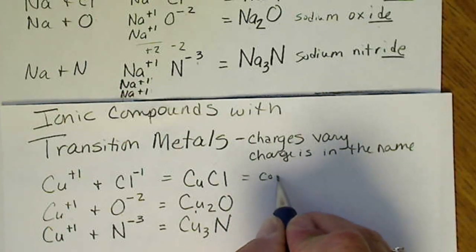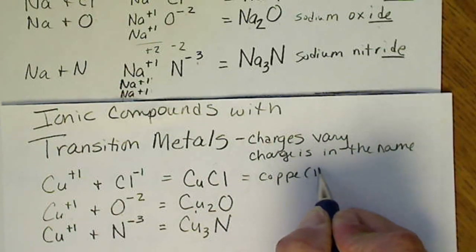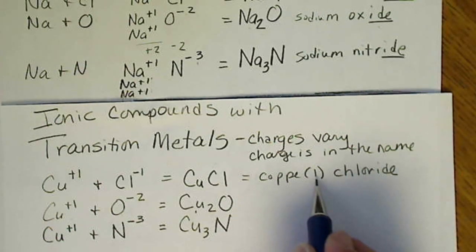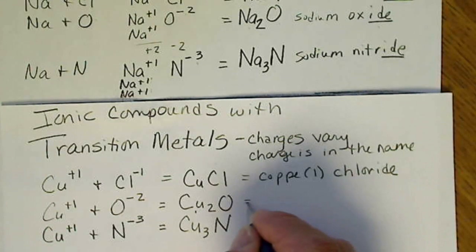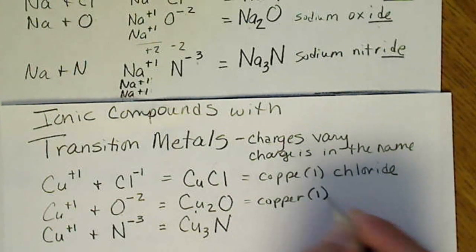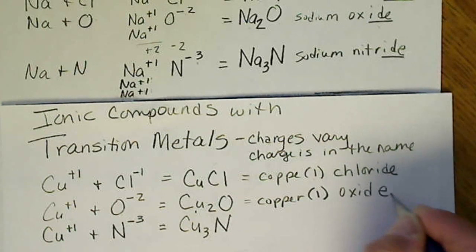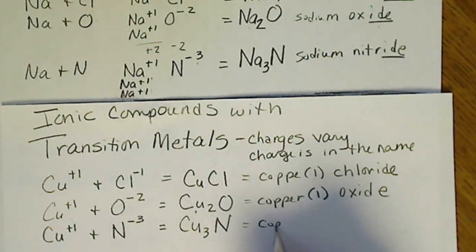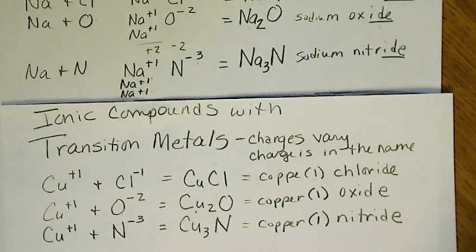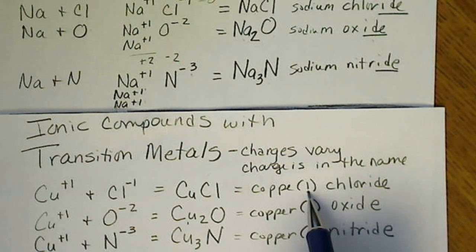So this one becomes copper 1 chloride, because the charge on copper is plus 1. So the charge is in the name, and that's the Roman number. This one is copper Roman number 1 oxide. This one is copper Roman number 1 nitride. The only thing that we've done differently in the naming is we have included the charge in the name.